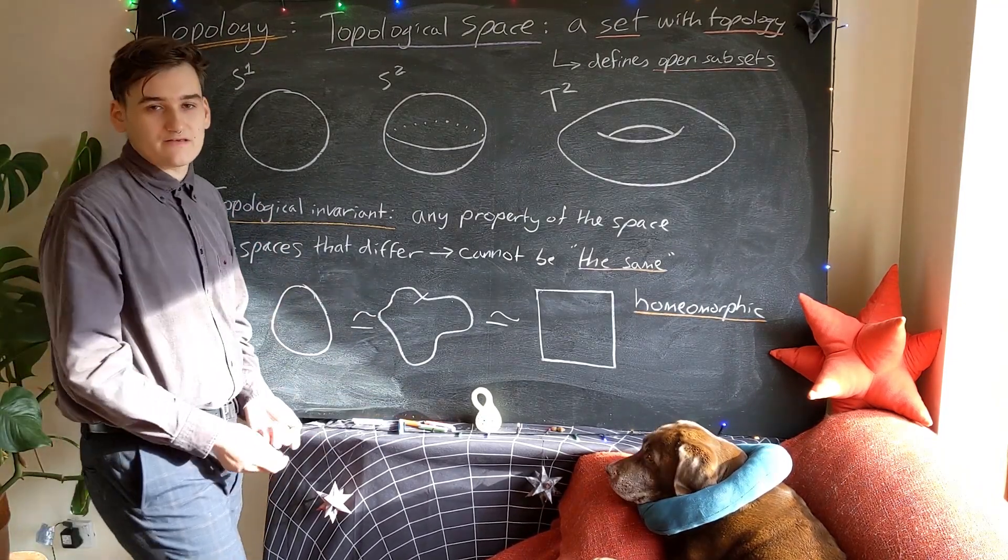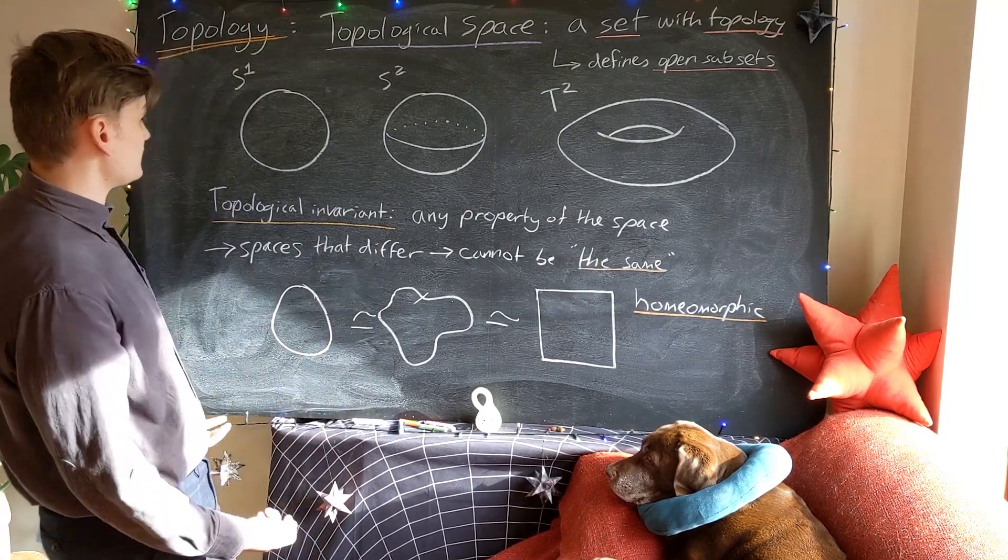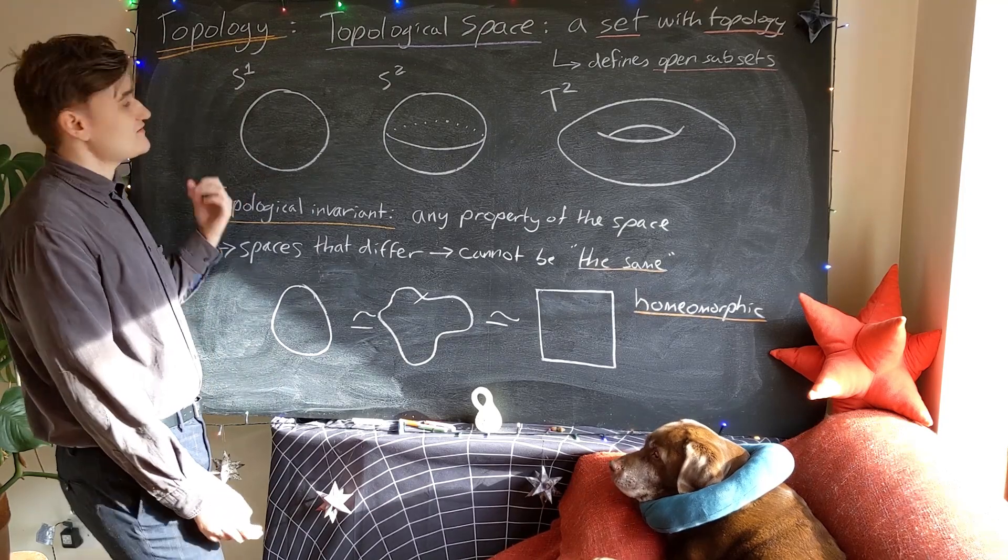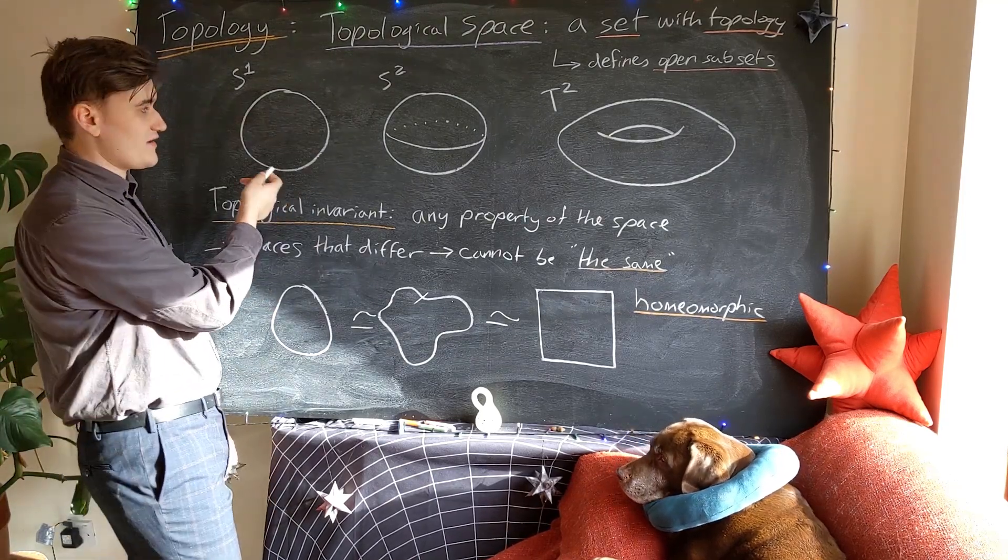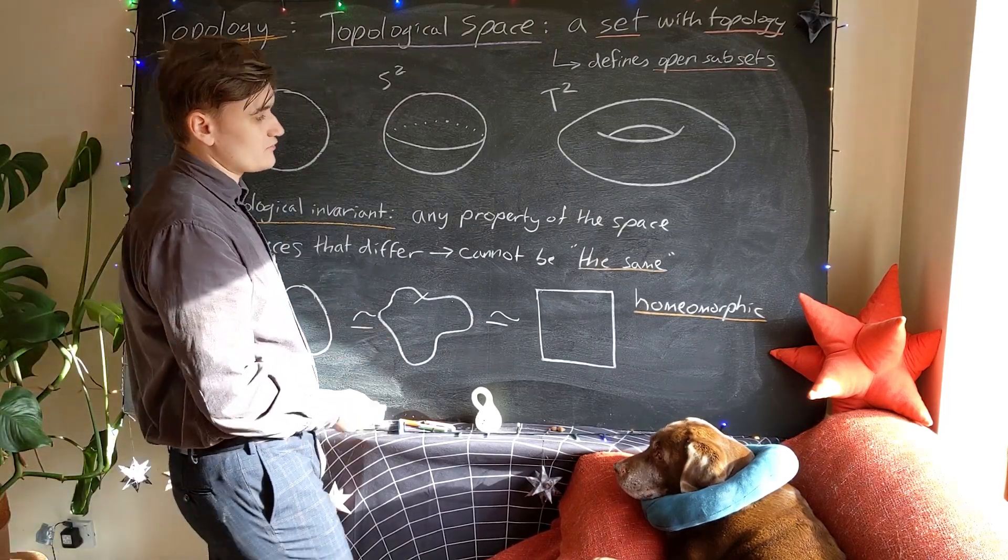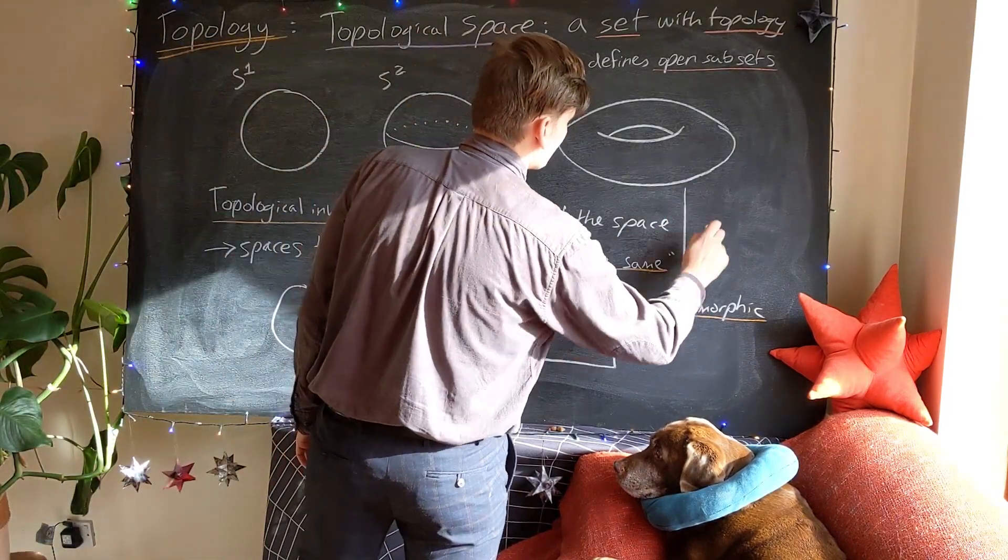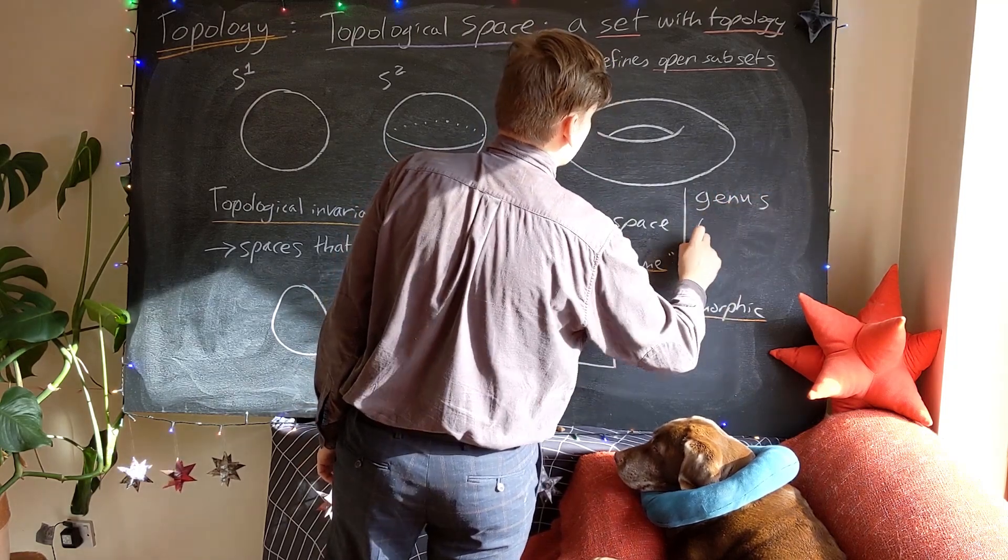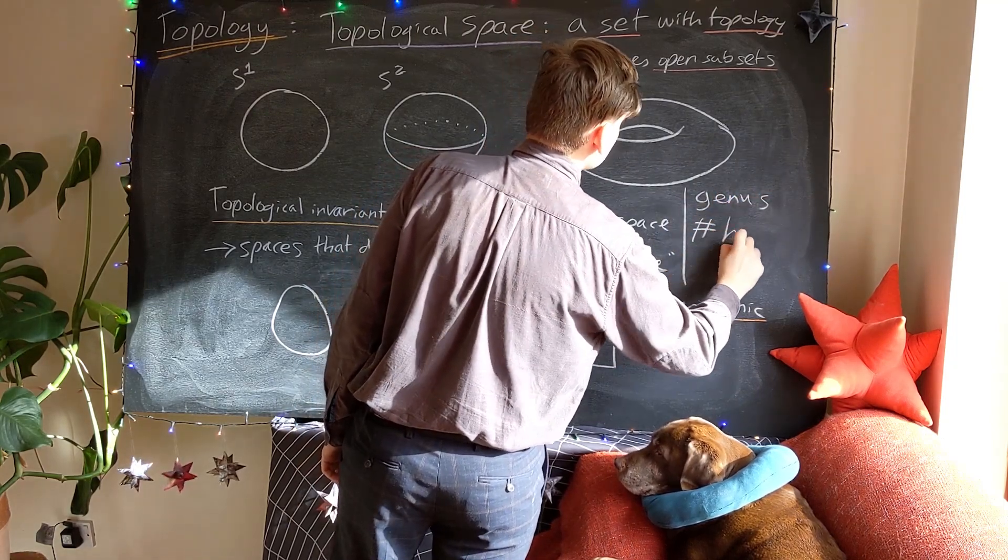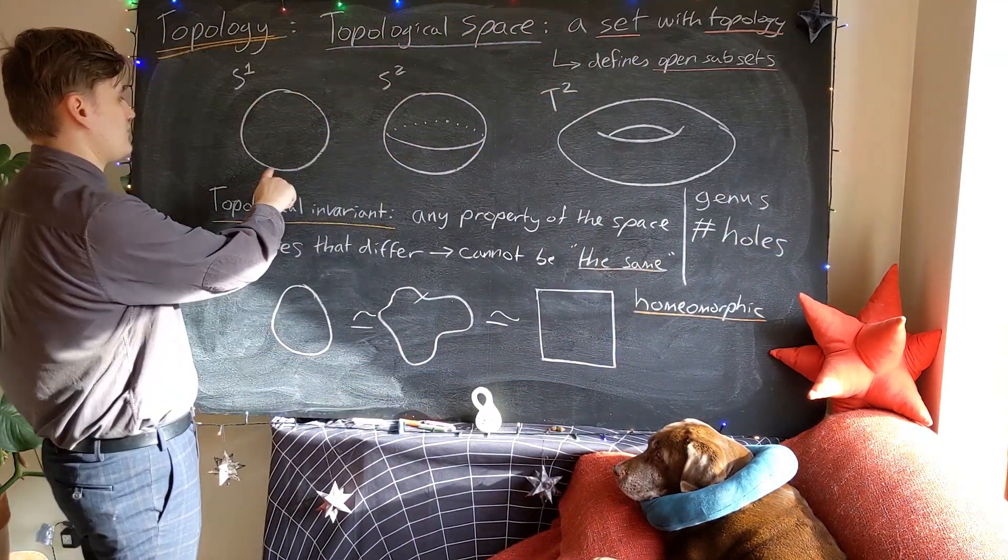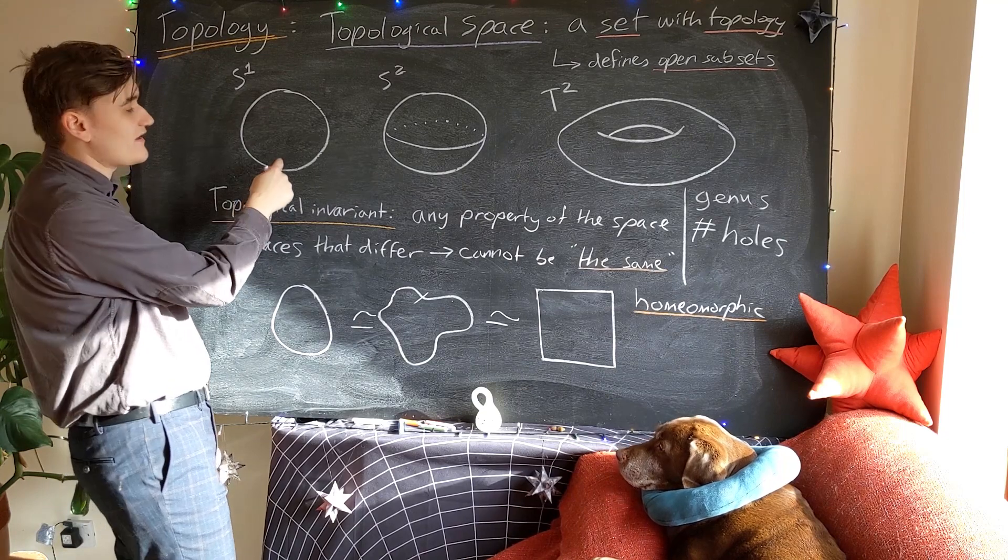So I'll just give you a few examples now of some possible topological invariants. A simple one would be the dimension of the space. So the circle would be a one-dimensional space, the sphere two-dimensional, etc. Another invariant would be the genus, which is essentially just the number of holes.